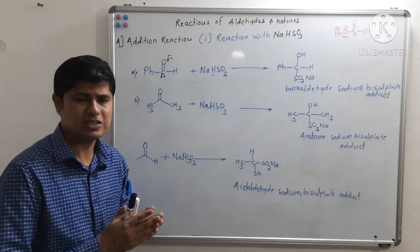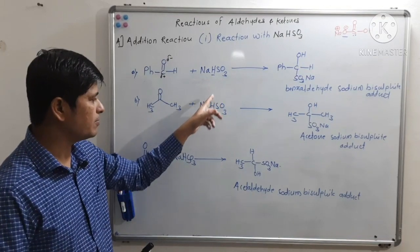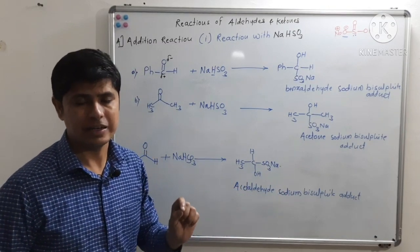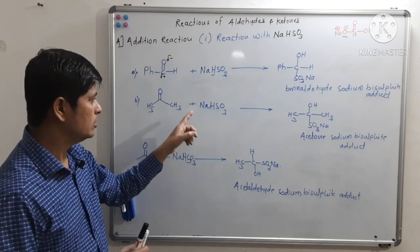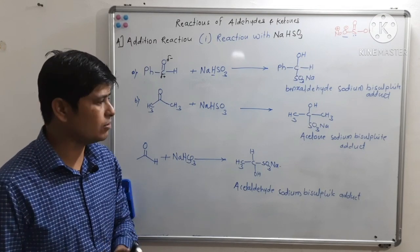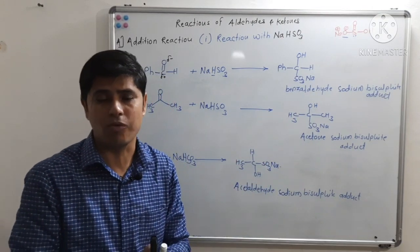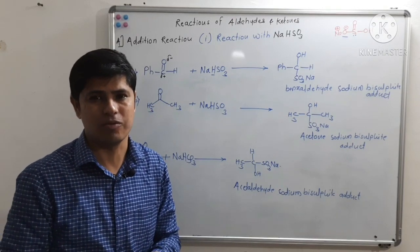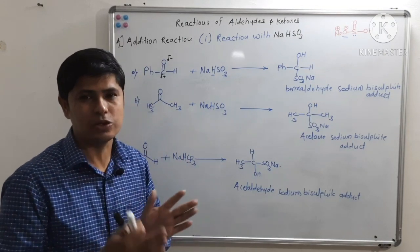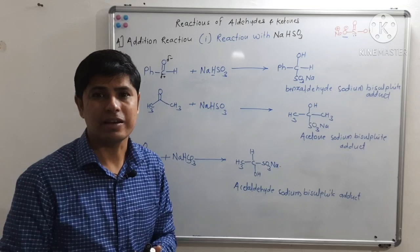What is the importance of the reaction with sodium bisulfite? Aldehydes and ketones can form bisulfite adducts by reaction with sodium bisulfite. These adducts — benzaldehyde, acetone, and acetaldehyde sodium bisulfite adducts — are crystalline solids. So we can easily separate aldehydes and ketones from other organic compounds.